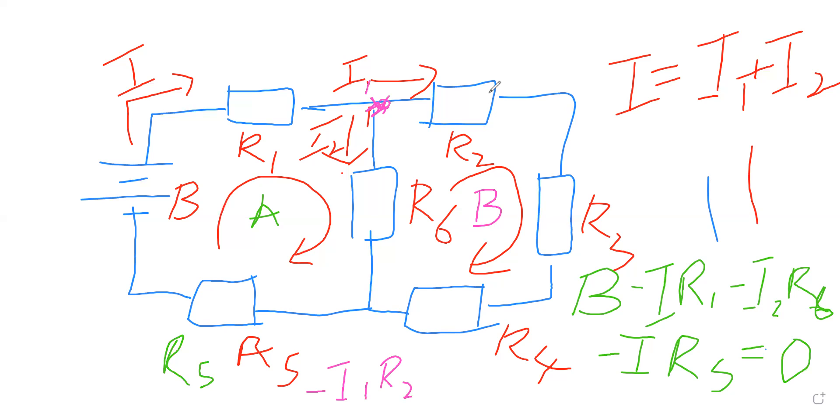And I1 flows through R3, then a voltage drop of I1 R3 also drops across R3. Again, I1 flows through R4, then minus I1 R4.